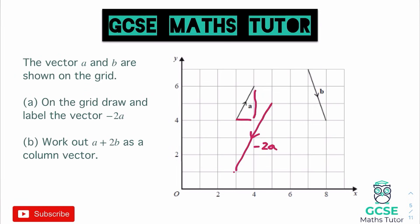For the next part, we've got to work out vector A plus 2B as a column vector. Looking at the pattern of A: it goes across 1 and up 2, so vector A is 1 over 2 — a positive 1 in the right direction and positive 2 moving upwards.